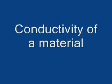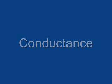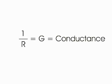This was all about conductivity of a material. Now we will try to understand what is conductance of a conductor. The reciprocal of resistance that is 1 by R is called conductance and is denoted by English letter G.